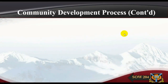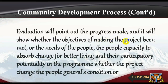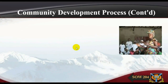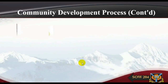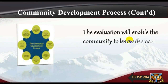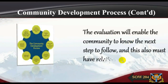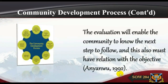The fifth stage in community development is identification and evaluation. Evaluation will point out the progress made and show whether the objectives of the project are being met and the needs of the people addressed — their capacity to absorb change for better living, their participatory potential, whether the project changed the people's general condition, improved patterns of behavior, or whether they acquired more knowledge, skill, and attitude, or promoted human well-being. All this will be known through the evaluation process, which will enable the community to know the next step to follow in relation to the objectives.